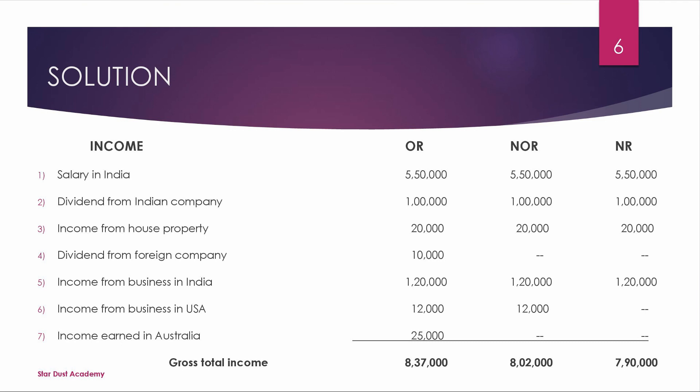Dividend from a foreign company received in England and deposited in a bank there — foreign income is taxable only in the Ordinary Resident case. Next, income from business in Kolkata managed from USA — since the business is in India, it is taxable. Income from business in USA controlled from Kanpur head office — it is taxable even in the non-resident case.